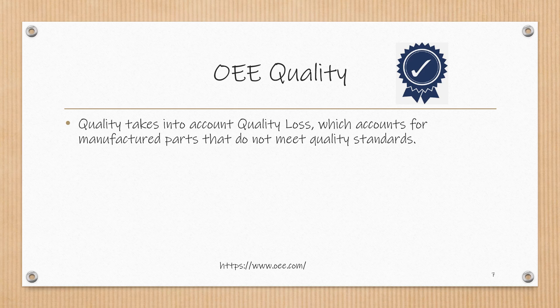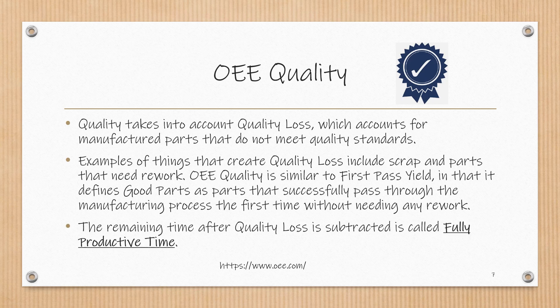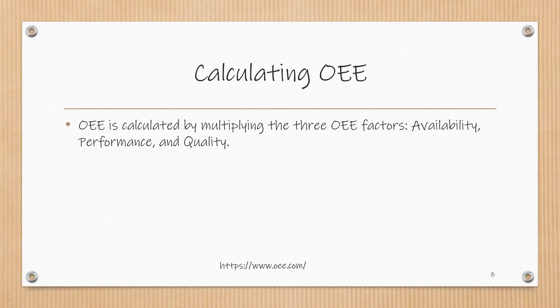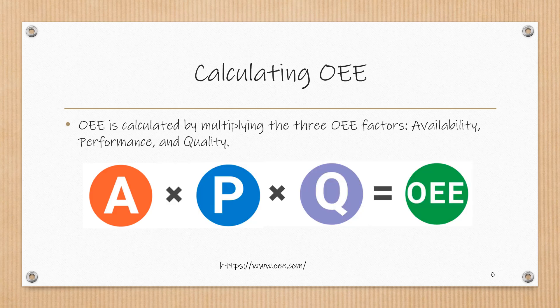Quality takes into account quality loss, which accounts for manufactured parts that do not meet quality standards. Examples include scrap and parts that need rework. OEE quality is similar to first pass yield in that it defines good parts as parts that successfully pass through the manufacturing process the first time without needing any rework. The remaining time after quality loss is subtracted is called fully productive time. OEE is calculated by multiplying the three fundamental factors: availability times performance times quality equals OEE.